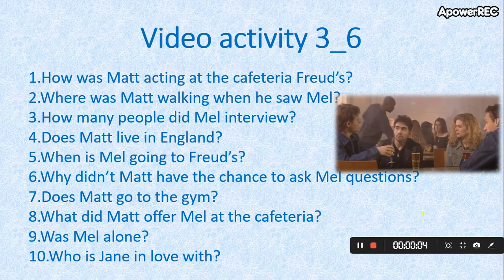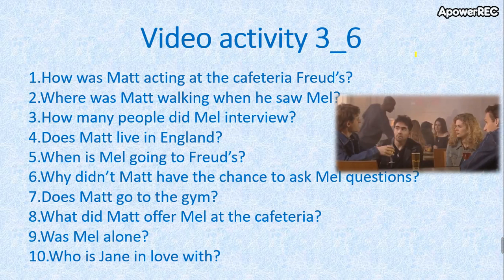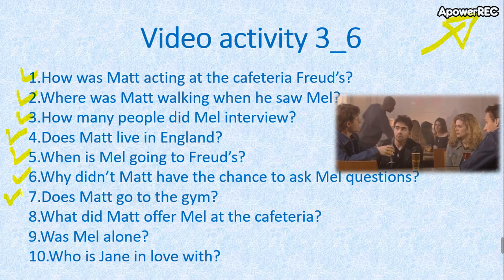Now we are going to start with video activity three underscore six, so you need to click here to answer all these questions. Here we are combining all the tenses: simple present, simple past, past continuous, present future going to, simple past in negative form, simple present, past of be, and simple present of be. You are going to watch this video and answer the questions on a piece of paper.